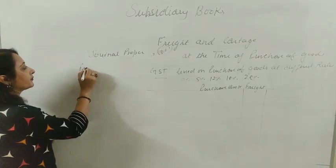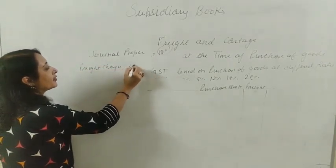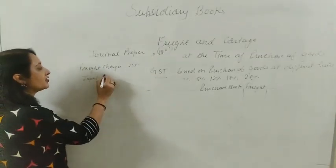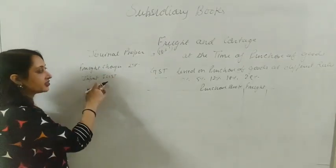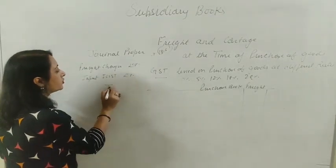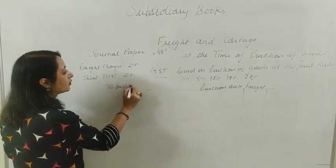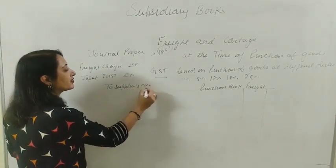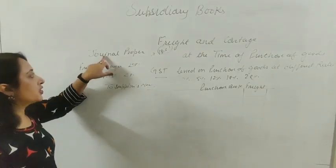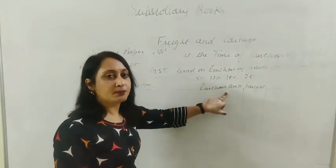That is the reason we don't include a freight column in the purchase book. Freight charges are shown in the journal proper. The entry will be: Freight charges Dr, Input IGST or CGST or SGST Dr, to Supplier's name. This entry is passed in the journal proper, not in the purchase book.